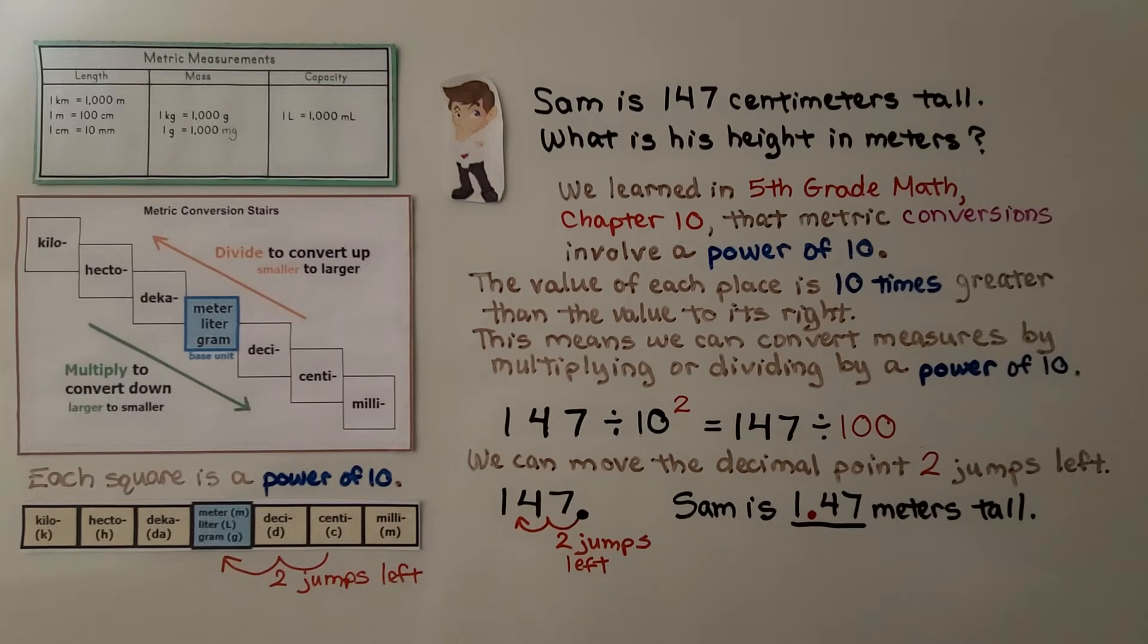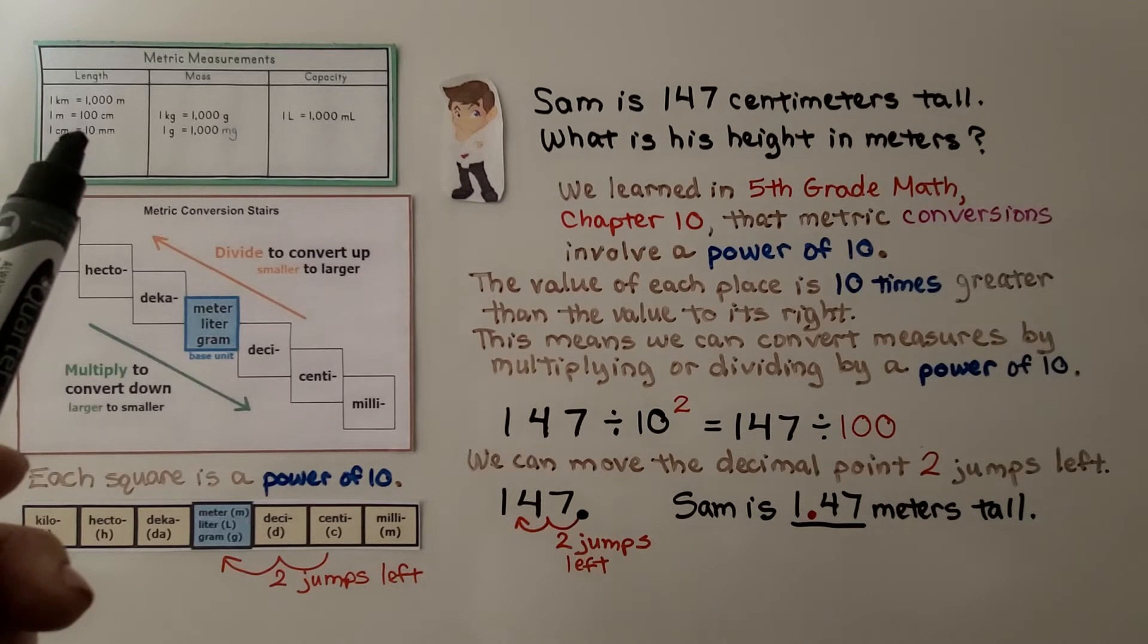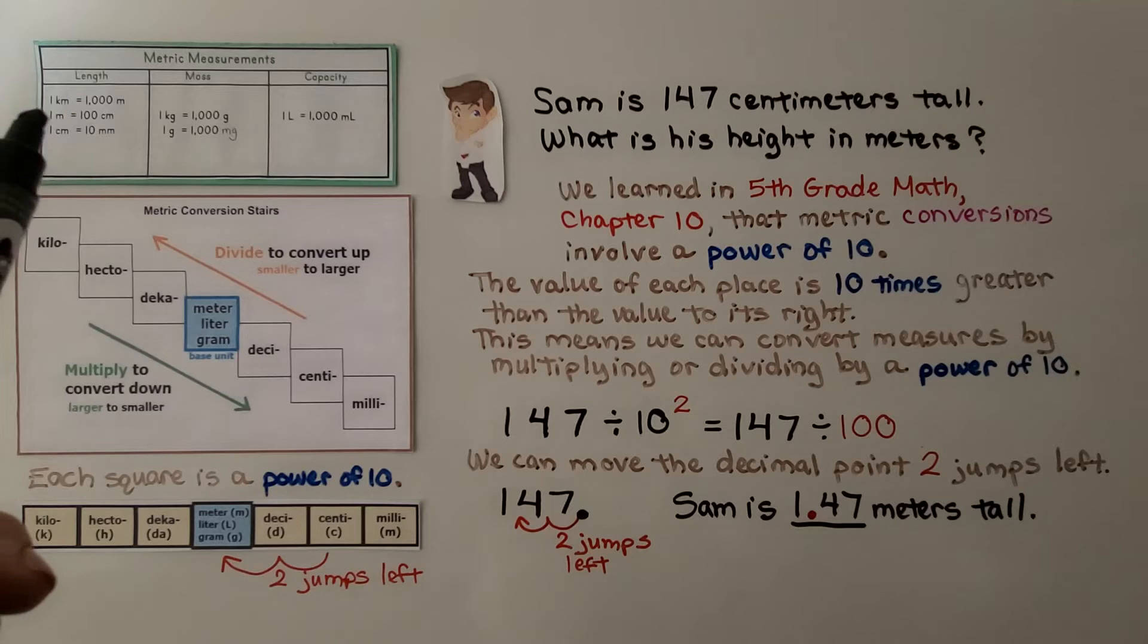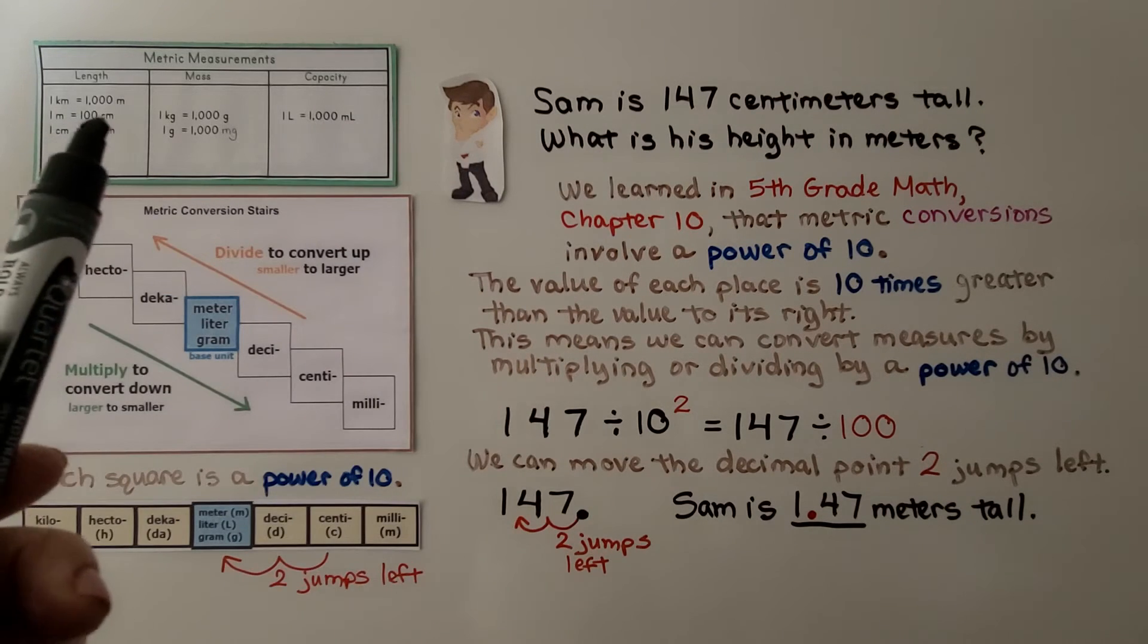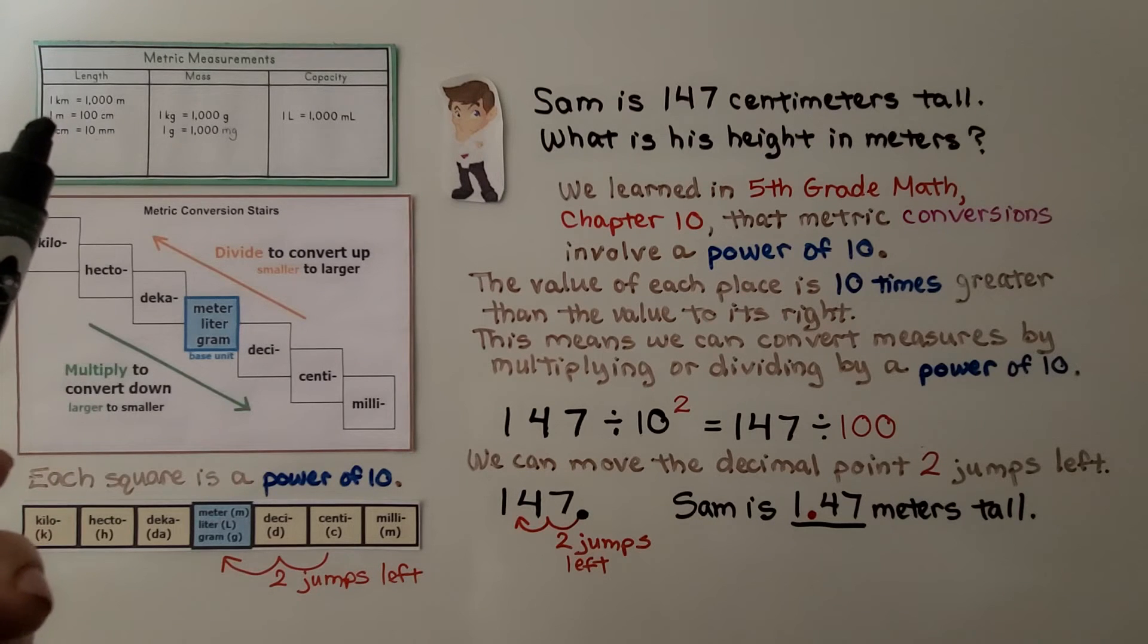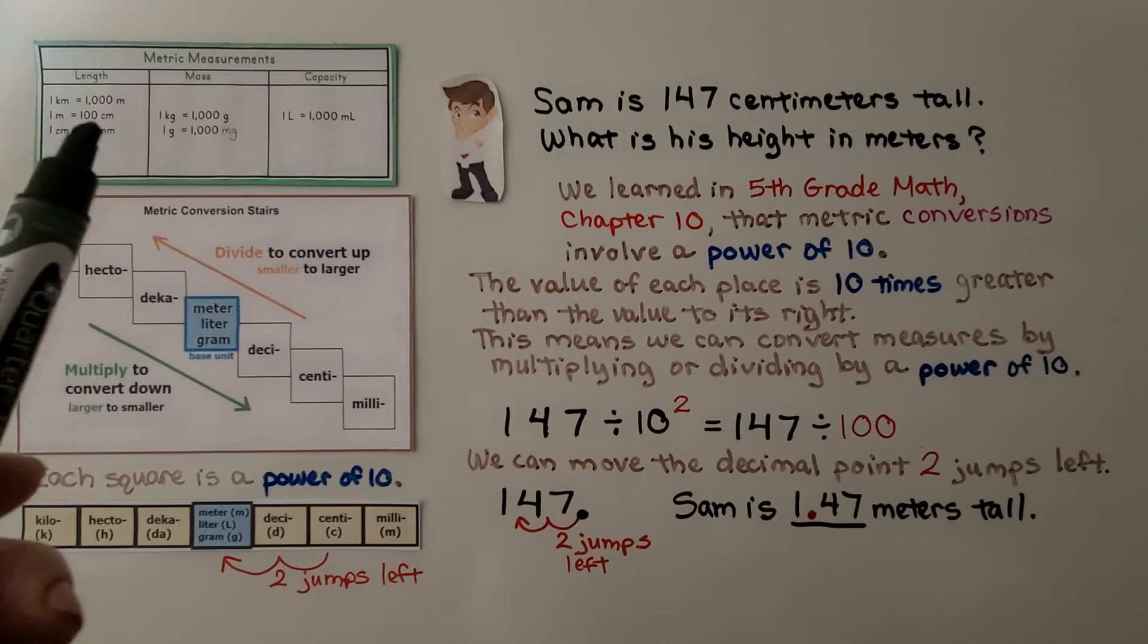Sam is 147 centimeters tall. What is his height in meters? We can see on our chart that 100 centimeters is 1 meter. And if he's 147, he's not 2 meters. That would be 200 centimeters, wouldn't it? So we know it's 1 meter and something.